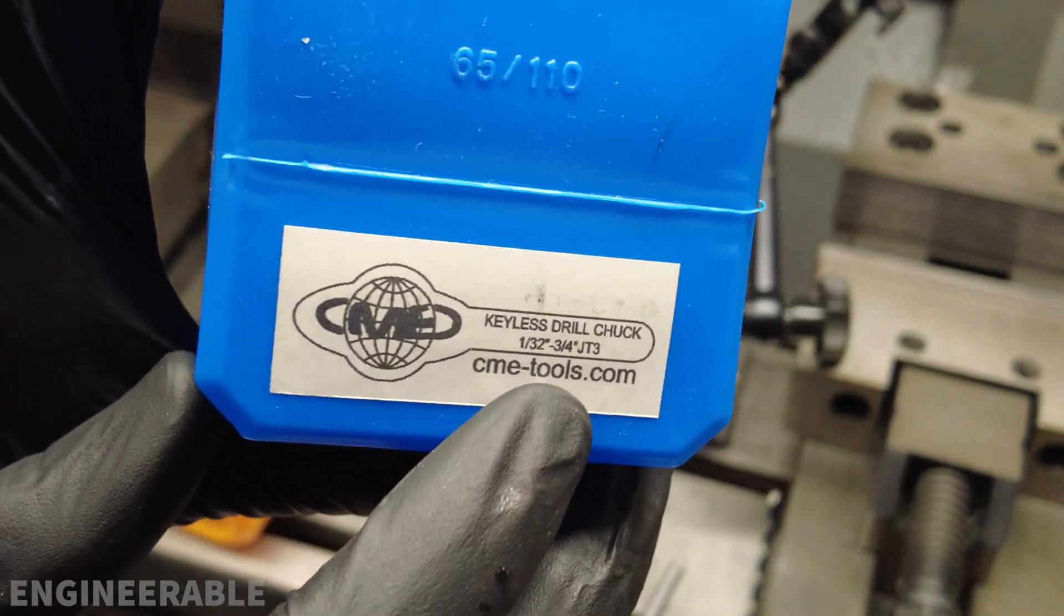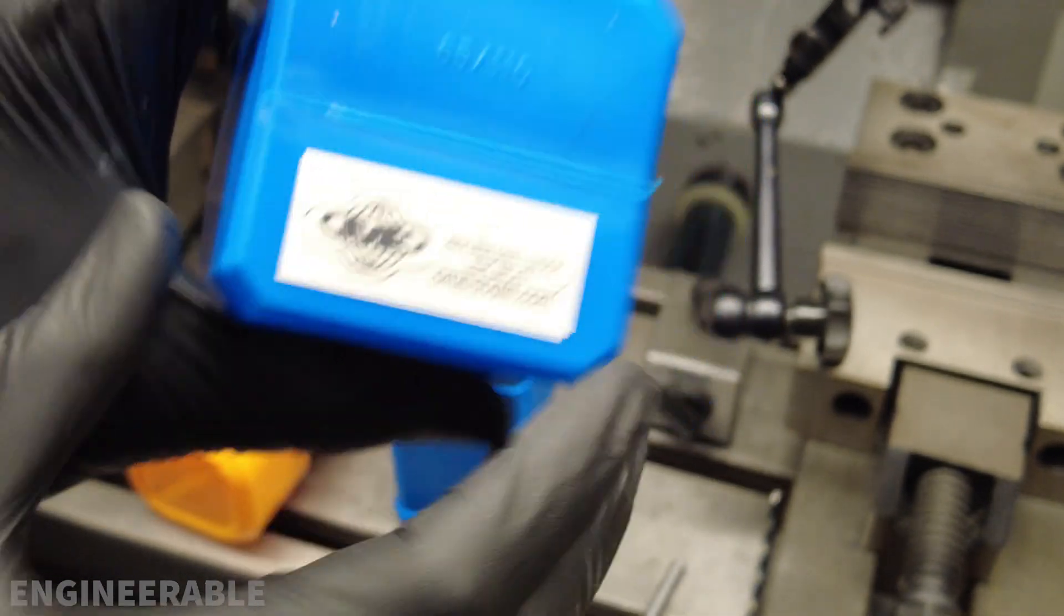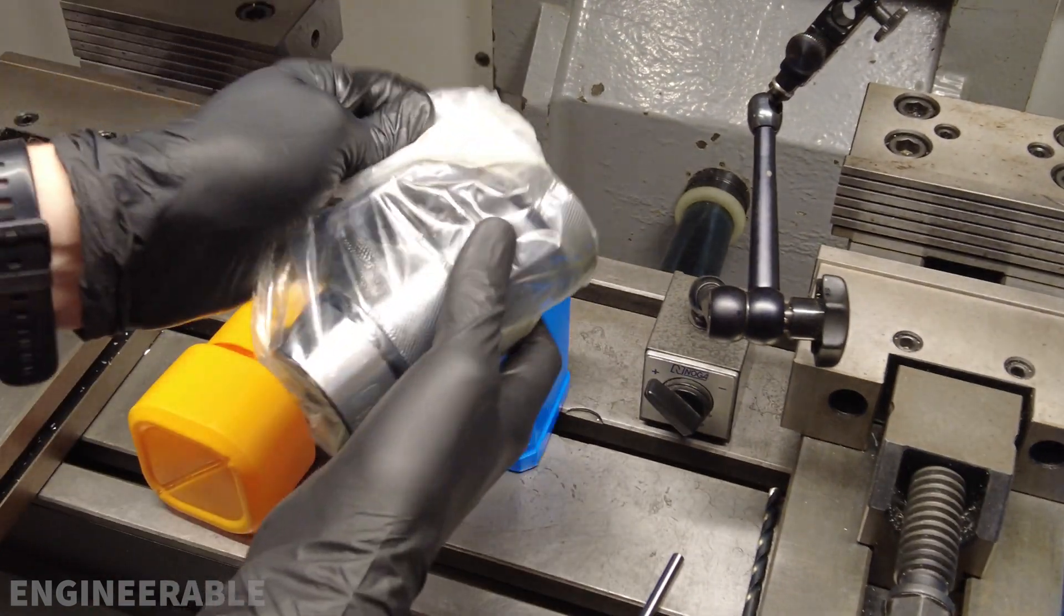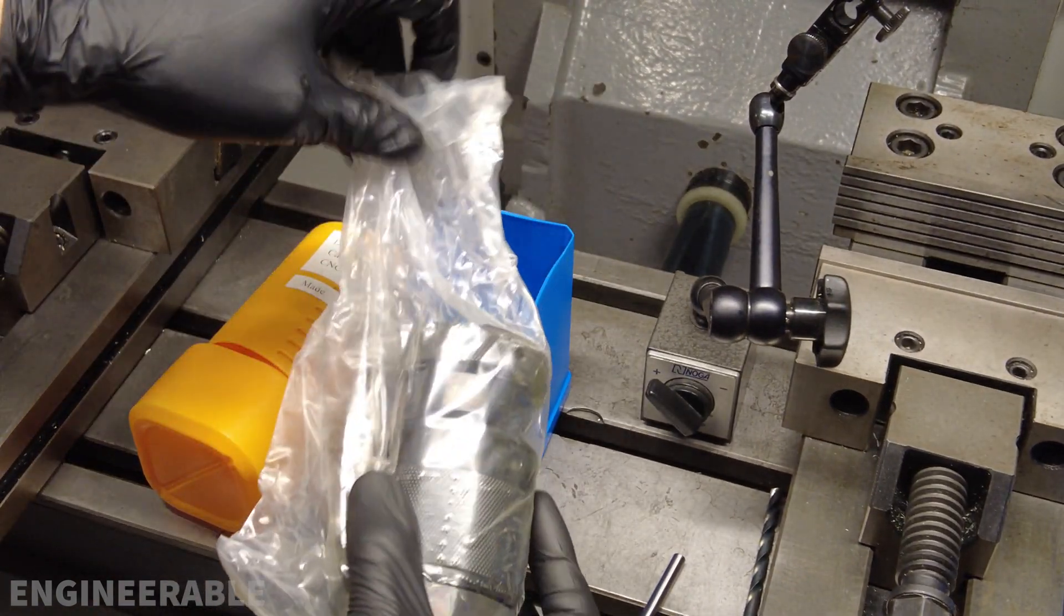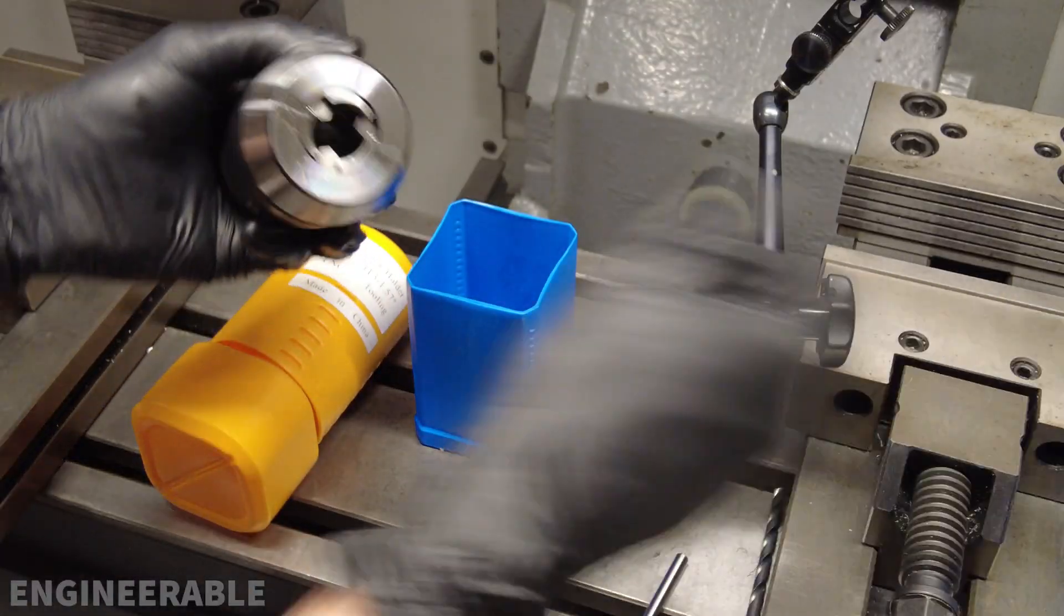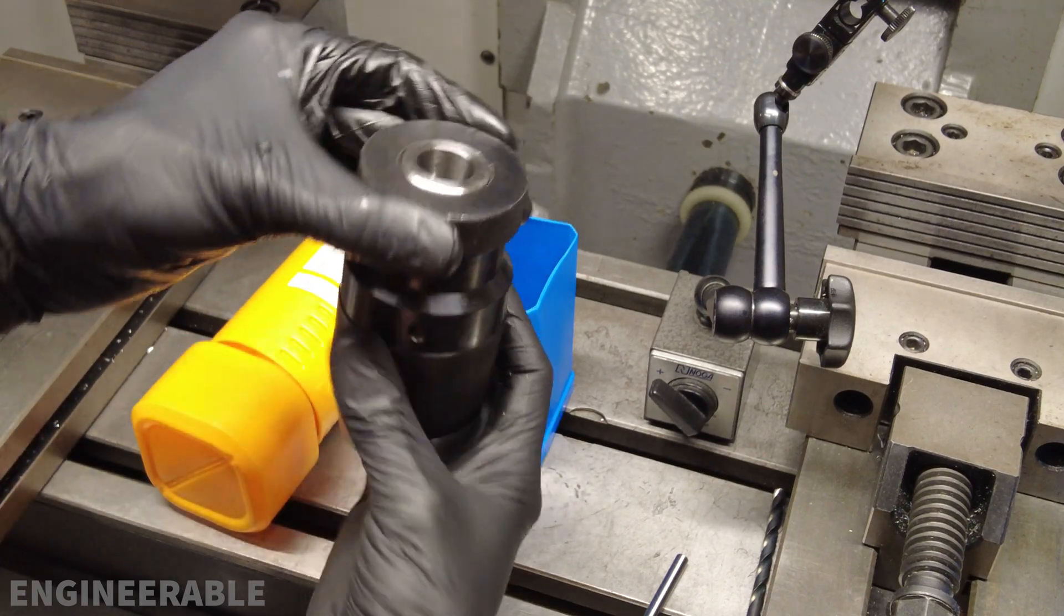This is a 1.32 to 3.25 inch drill chuck from CME Tools. It's very inexpensive at $59 for the drill chuck and the CAT 40 holder. It's a massive, huge drill chuck.